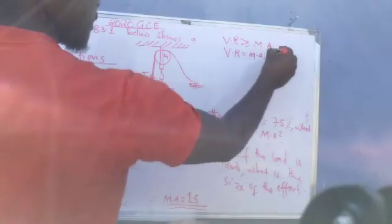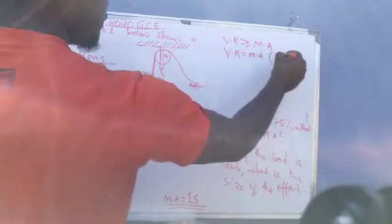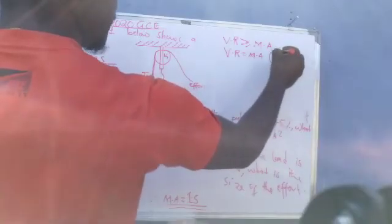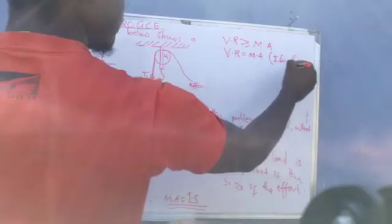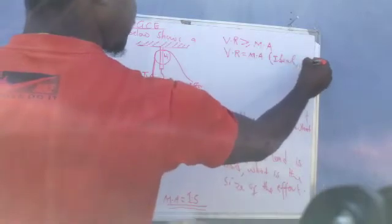Then if you have a situation whereby the velocity ratio is equal to mechanical advantage, just know that the machine is ideal. You've been given an ideal machine which is 100% efficient.